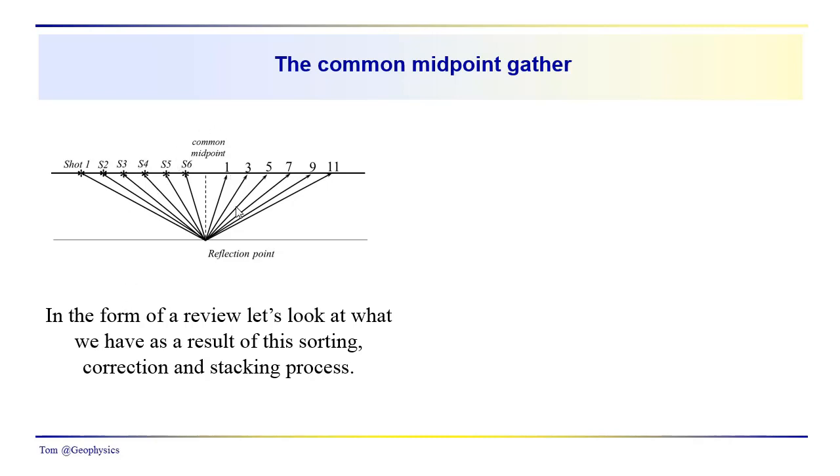As we noted last time, we're going to come back to our common midpoint gather, the trace combinations that provide information from a common reflection point if the layer's flat, or a common midpoint if it isn't. We will be talking about the dipping layer problem probably in the next video.